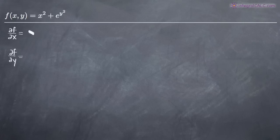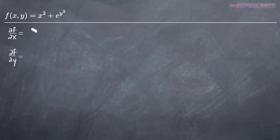We'll calculate the partial derivative with respect to x first. Remember that when you're calculating the partial derivative with respect to x, you're treating x as the variable and holding y constant — treating it like a constant number, like 2 or 4 or something like that. So when we take the partial derivative with respect to x, we'll go term by term. Taking the partial derivative with respect to x of x squared gives us 2x.